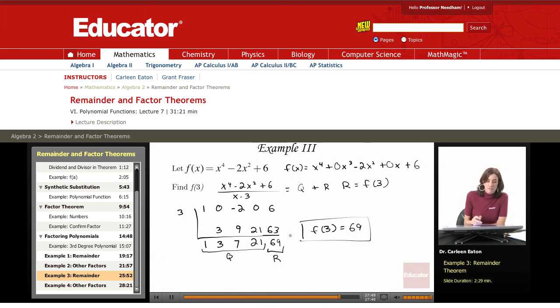I could have solved this by substituting 3 in here, but this is actually an easier way to go about it. So again, to find f of 3, I'm going to divide this polynomial function by x minus 3. I'm going to find my quotient and my remainder, and f of 3 equals that remainder of 69. Always be careful to include zeros for coefficients for missing terms.